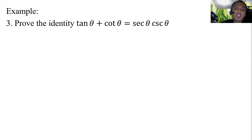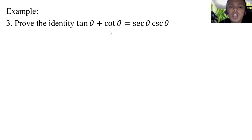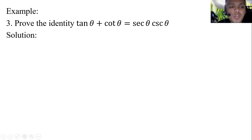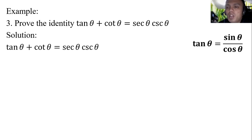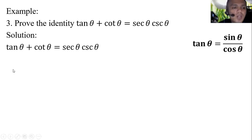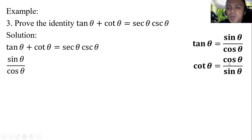Prove the identity: tangent theta plus cotangent theta equal to secant theta times cosecant theta. We will use these values: tangent theta is equal to sine theta over cosine theta, and cotangent theta is replaced with cosine theta over sine theta, since they are reciprocals. On the right side, secant theta is replaced with 1 over cosine theta, and cosecant theta is replaced with 1 over sine theta.